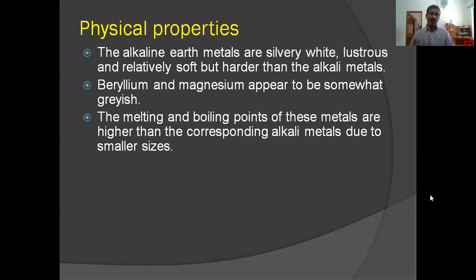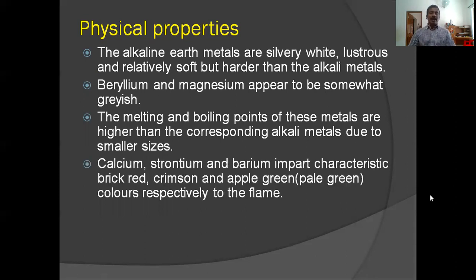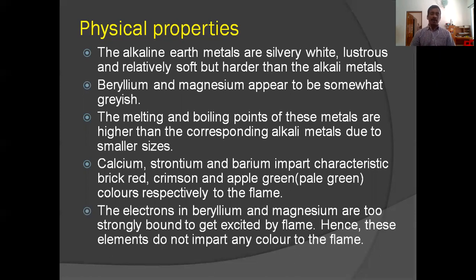Therefore their boiling and melting points are slightly higher. Calcium, strontium and barium give characteristic brick red, crimson and apple green colors respectively to the flame. Calcium gives brick red color, barium pale green or apple green color, and strontium crimson red color. This flame color is an important test to identify these ions. Electrons in beryllium and magnesium are too strongly bound to get excited by flame, hence these elements do not impart any color to the flame.